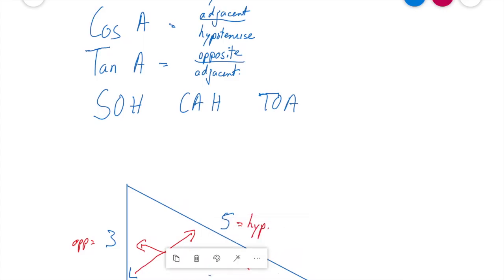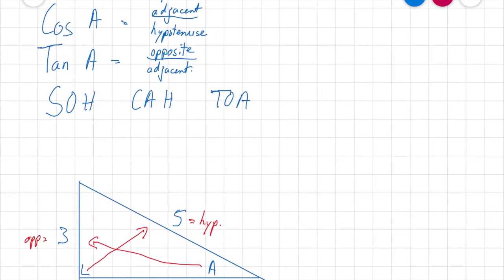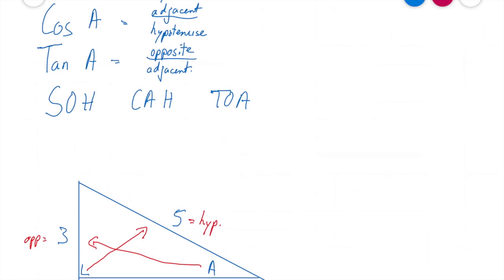Well, then the other side has to be my adjacent. How do I know or how do I double check that? Well, this angle is a side even between the angle and the right angle there. Excellent.